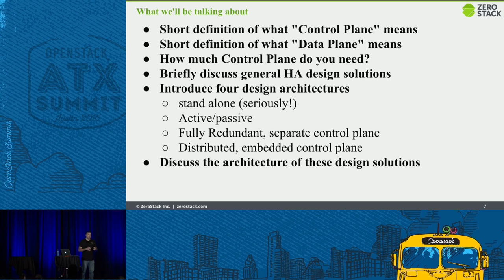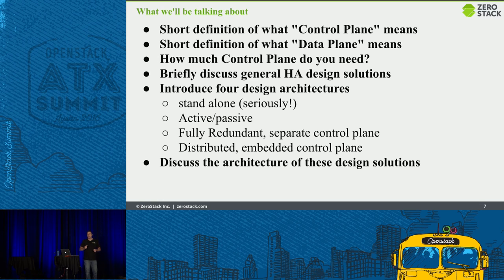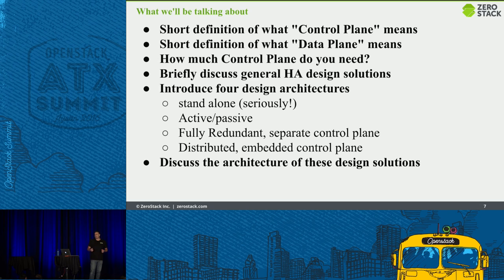We'll talk about general HA and how you apply HA design patterns to solutions architecture, then how it relates specifically to OpenStack. We'll cover four primary architecture design patterns: standalone — and I'm serious about this, there are good reasons to choose standalone over something more complex — active-passive, fully redundant active-active, and a distributed control plane embedded throughout the cluster.